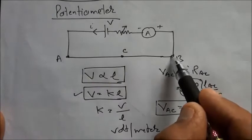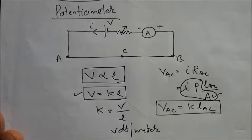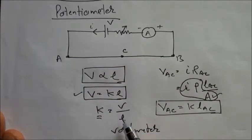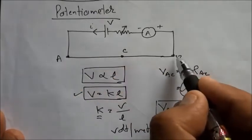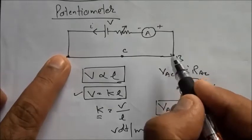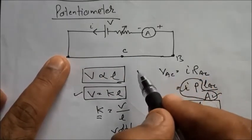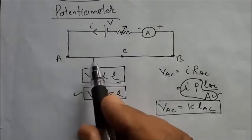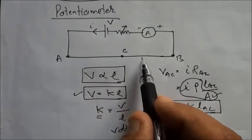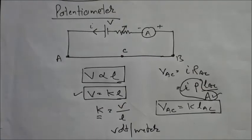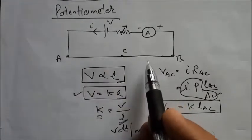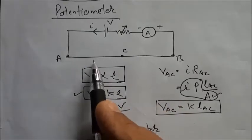The length of the potentiometer wire is taken very large because this increases sensitivity. If L is large, the drop in potential per unit length is less — K will be less. For example, if the potential difference is 2 volts over 2 meters instead of 10 centimeters, the potential drop per millimeter is much less, so the least count is reduced. This makes it more precise. Potentiometers in labs generally have wire lengths of 3 to 10 meters.